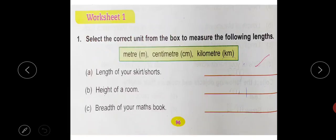Now let us solve some questions of worksheet one. Question number one: select the correct unit from the box to measure the following lengths. Meter, centimeter, kilometer. We are given these three units and we have to pick the correct unit to measure the lengths. First one is length of your skirt or shorts. You can see skirt is a short length, so we use centimeter.